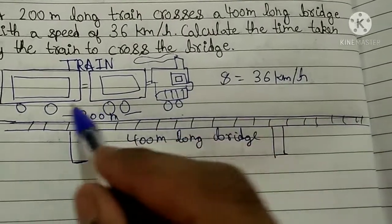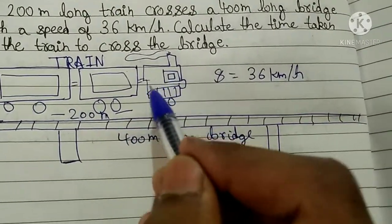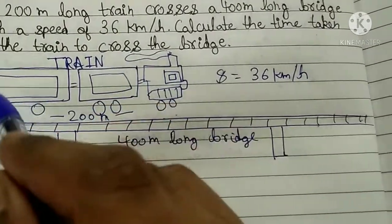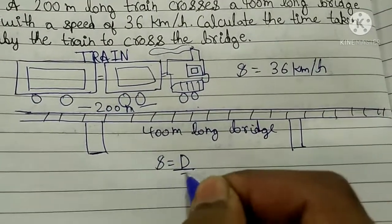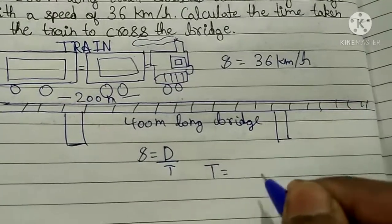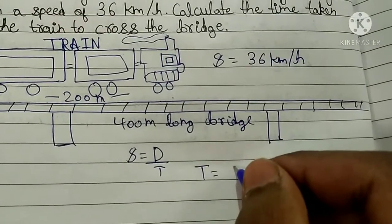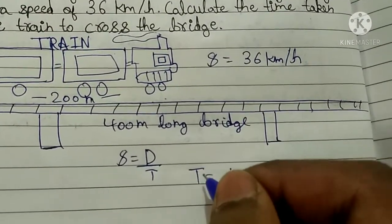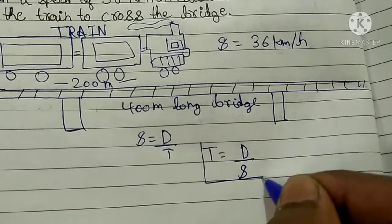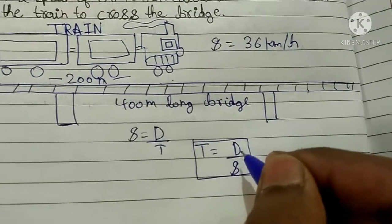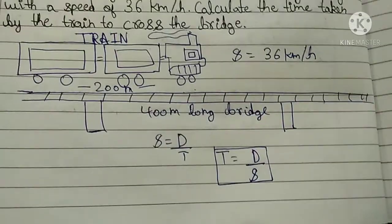Let's be clear that we are not talking about just the engine, we are talking about the whole train. We know that speed equals distance upon time, so then time will be distance upon speed. We will put this formula here: time is equal to distance upon speed.